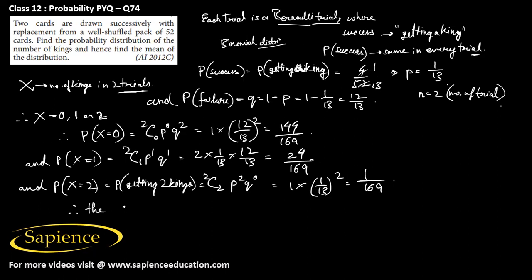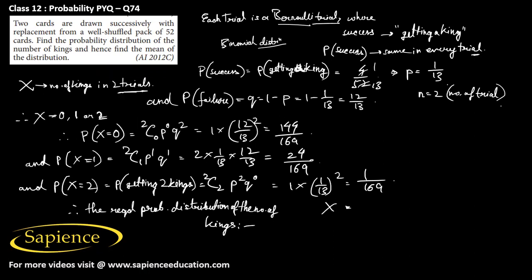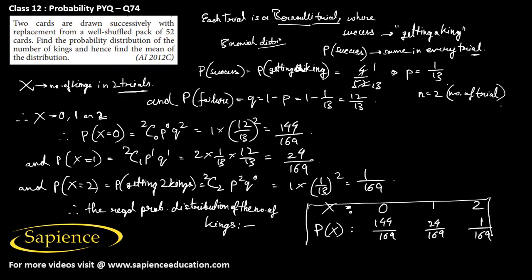The required probability distribution of the number of kings is: X takes values 0, 1, and 2 with corresponding probabilities P(X=0) = 144/169, P(X=1) = 24/169, and P(X=2) = 1/169.